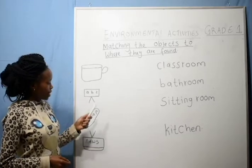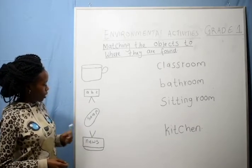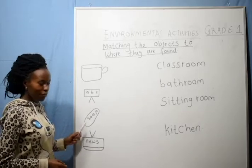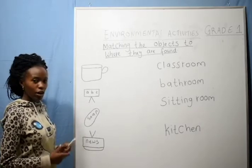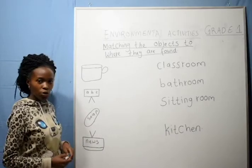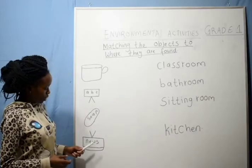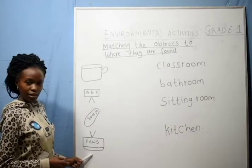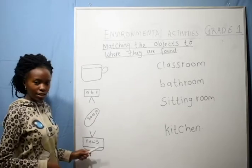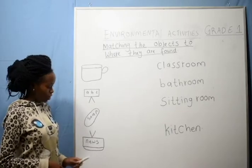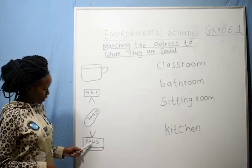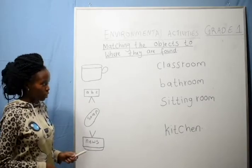Are we together? Yeah. This one is a blackboard. What is this? Very good. This one is soap — you can see it is written here: soap. And what is this? Very good. This one is a TV, a television. You can see here it is written news.